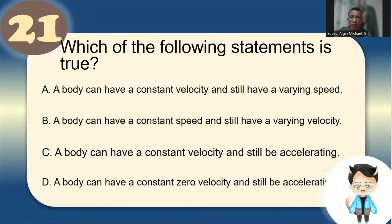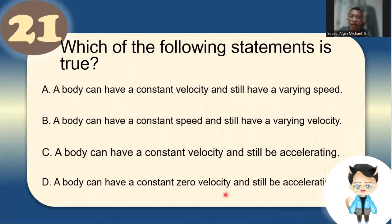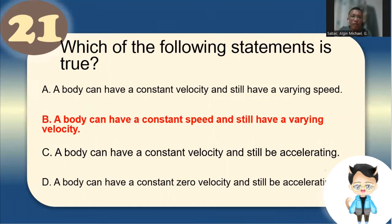Number 20: Which of the following statements is true? Letter A — constant velocity but varying speed: false, if velocity is constant then speed is also constant. Letter D — zero velocity but still accelerating: false. Letter C — constant velocity but still accelerating: false. The answer is letter B: a body can have a constant speed and still have a varying velocity.